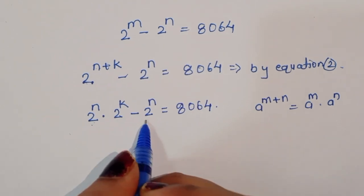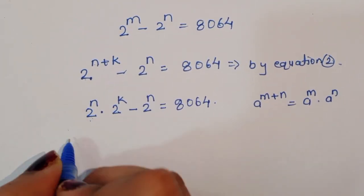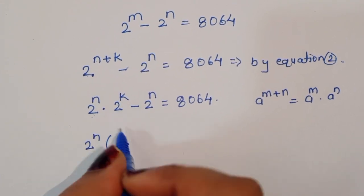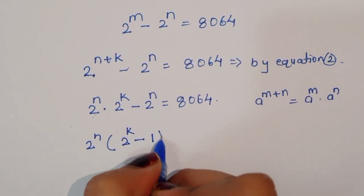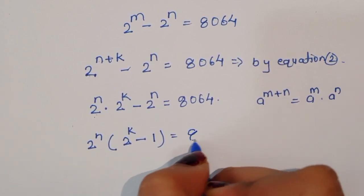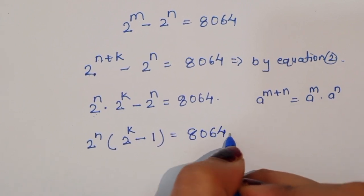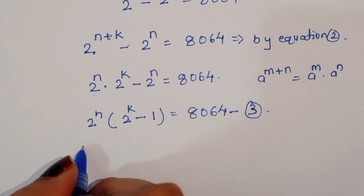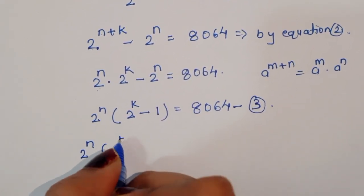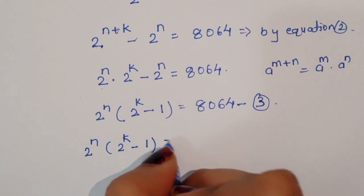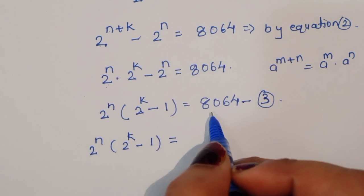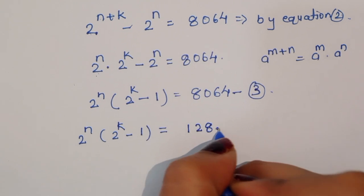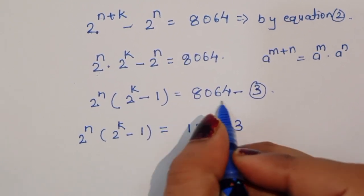Taking 2 power n common, we get 2 power n times (2 power k minus 1) is equal to 8064. Now we factor 8064 and can write it as 128 times 63. So this gives us equation number 3.